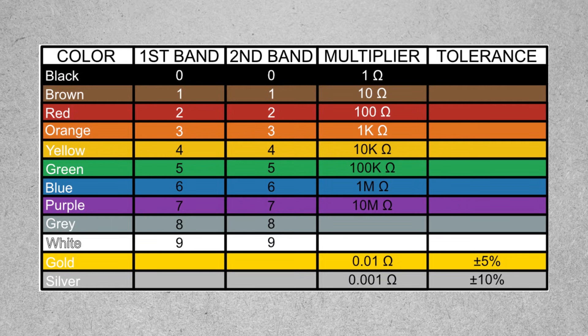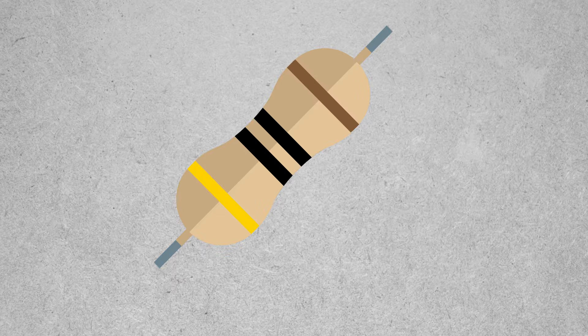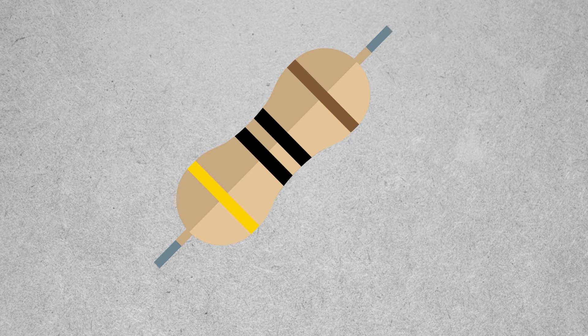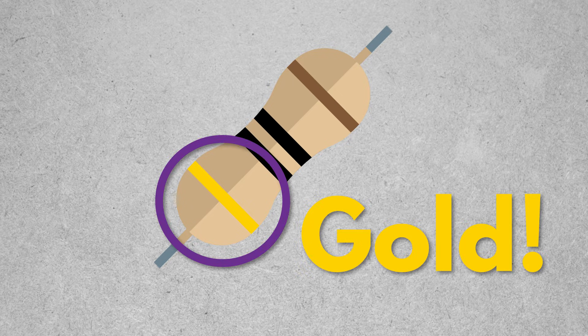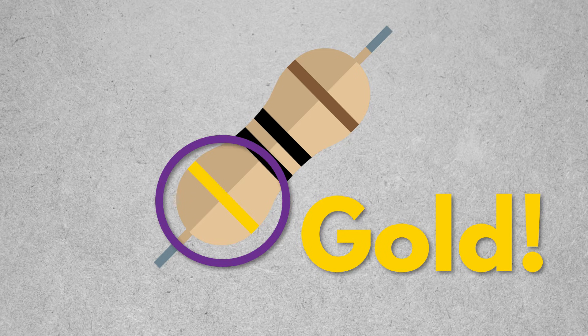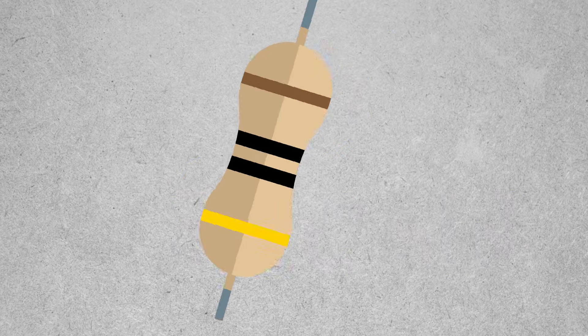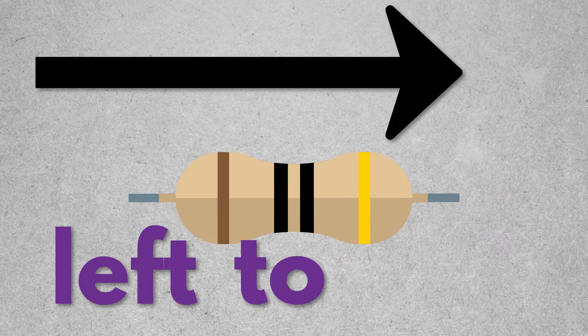In this video we're going to learn how to read a 4-band resistor. To begin with, you want to find the gold or silver side. That's going to give you a tolerance band, which we'll talk about in just a moment. Once you have that established, we're going to read the colors from left to right.